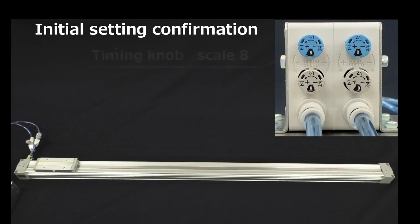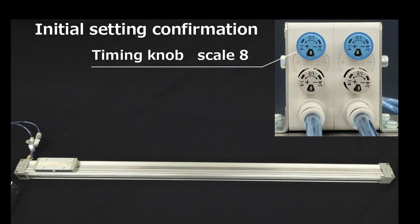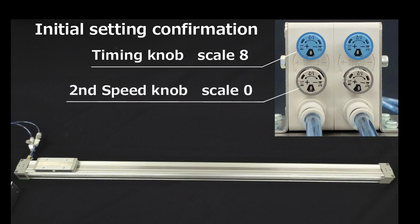The blue timing knob, which adjusts the deceleration position, should be at position 8. The grey second speed knob, which adjusts the second speed, should be at position 0.